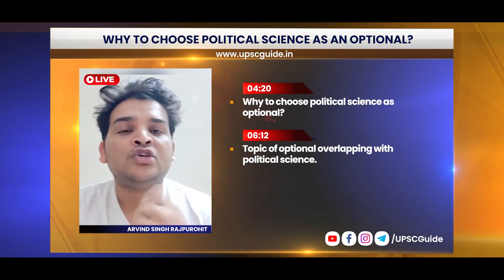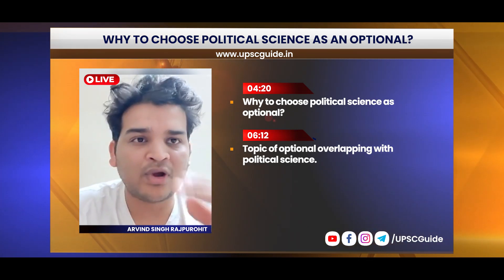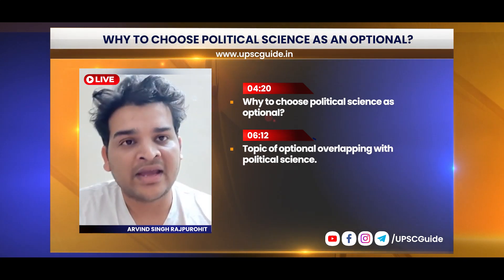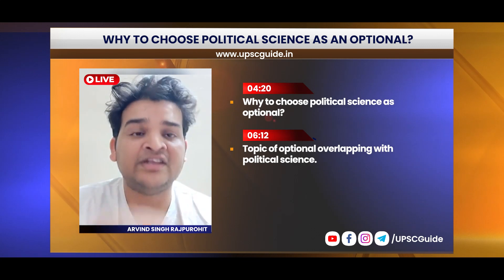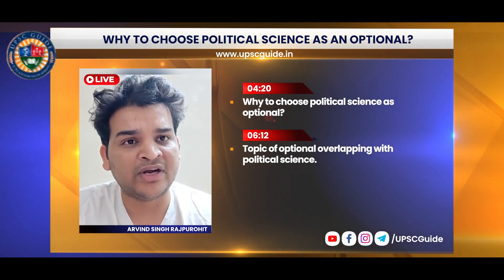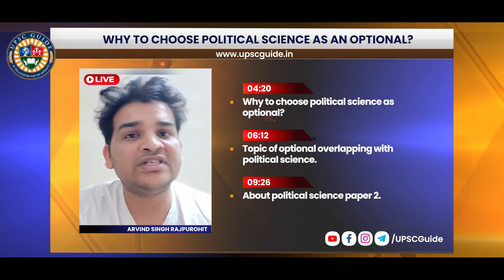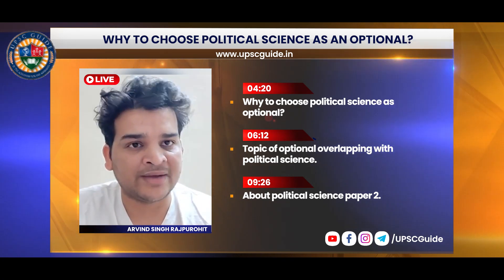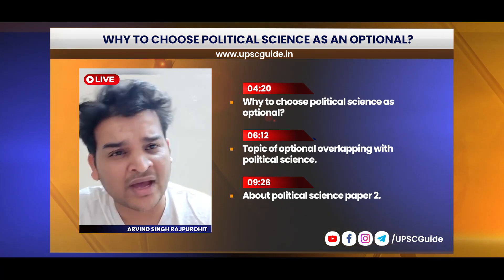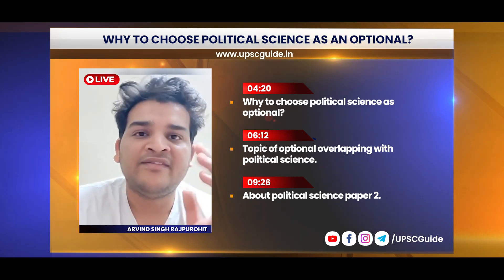Now coming to Paper 1 Part B - in Part B you have to learn governance-related issues, policy and constitution-related issues. Some topics are related to modern history, such as the Civil Disobedience Movement, the Non-Cooperation Movement, and the Quit India Movement. All these things again match with GS. Grassroots democracy, the constitution, the caste system, the federal system - all of these you have to learn, which again matches GS2.